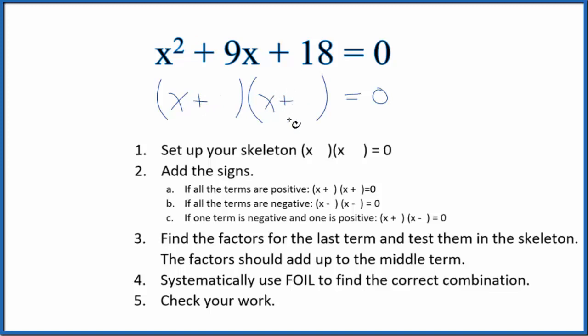Next we're going to find the factors for the last term 18 that add up to the middle term. So if we look at 18 here, we could have 1 times 18 that would give us 18,